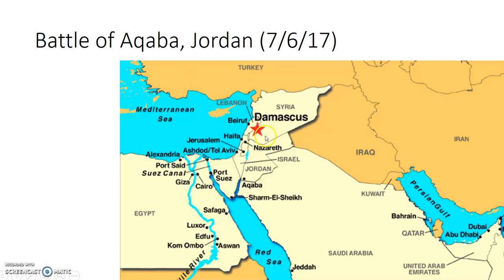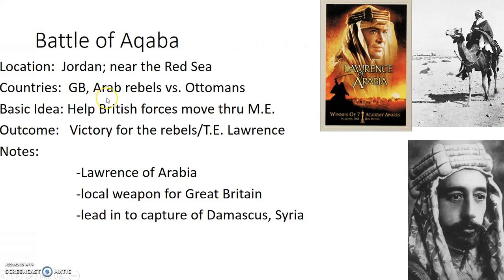That brings us to the first battle we're talking about today — the Battle of Aqaba in Jordan. Aqaba is located just north of the Red Sea in what is today present-day Jordan. The British have a large garrison in Egypt and want to travel across the Sinai Peninsula, then go north to Damascus to attack the Ottoman stronghold in what is today Syria. To do that they need to make sure there aren't Ottoman troops in the Arabian Peninsula that could attack them from behind. So the Battle of Aqaba is really to ensure the British can travel safely to Damascus.